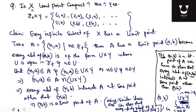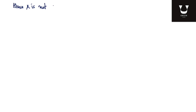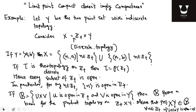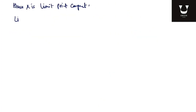Hence X is limit point compact. Although the verification here is not complete, you have got the idea. So X is limit point compact. I observed in this example that this space X is not compact but it is limit point compact. Therefore, limit point compact does not necessarily imply compact.